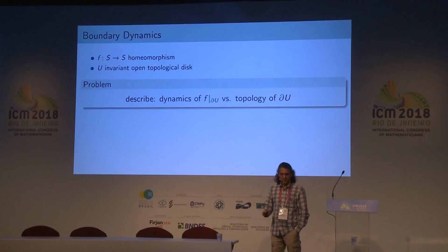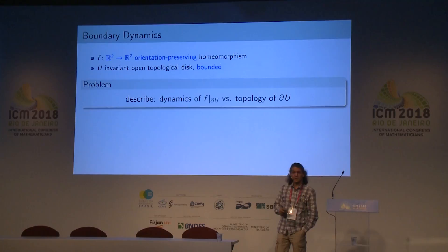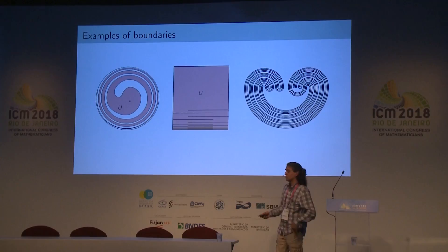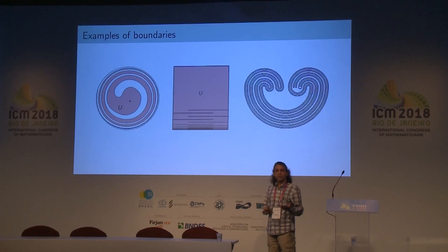To simplify everything, I'll restrict to orientation-preserving homeomorphisms of the plane and assume that the topological disk is bounded. First, I want to show some examples to illustrate how the boundary of a topological disk can be much more complicated than a circle. Sometimes when you say 'disk' you think the boundary is just a circle, but you can have points which cannot be reached from within the disk by a continuous path — non-accessible points.